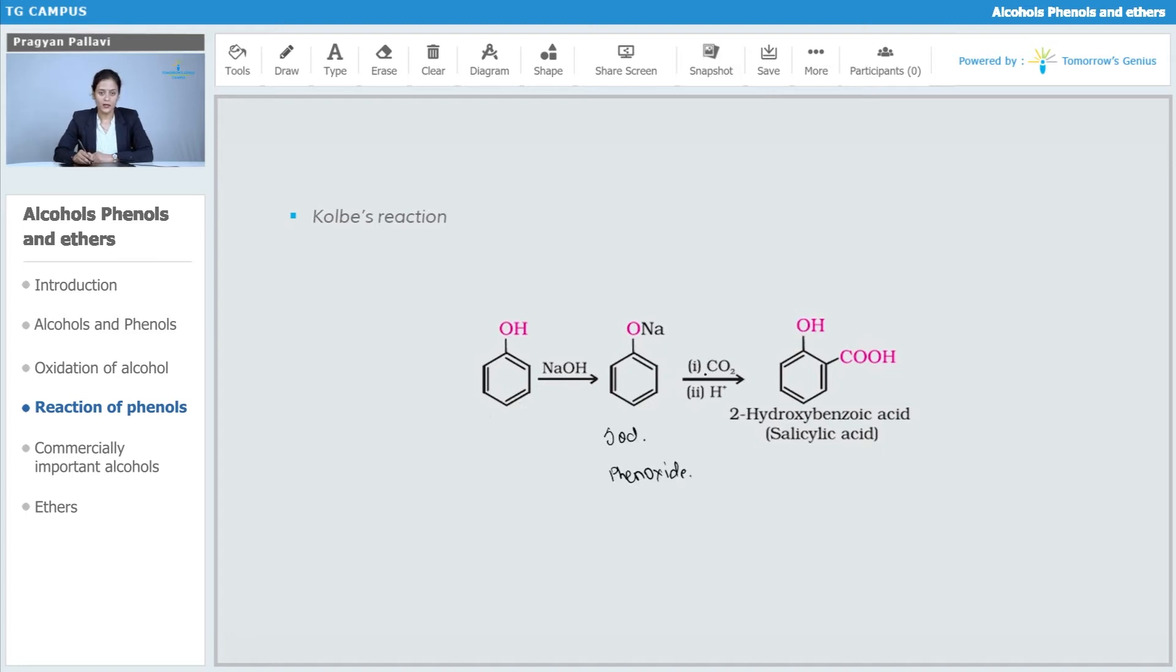And then, upon treatment with carbon dioxide at certain temperature and pressure, along with acid, it forms 2-hydroxybenzoic acid. Its common name is salicylic acid. At ortho position, we are having this carboxylic group.